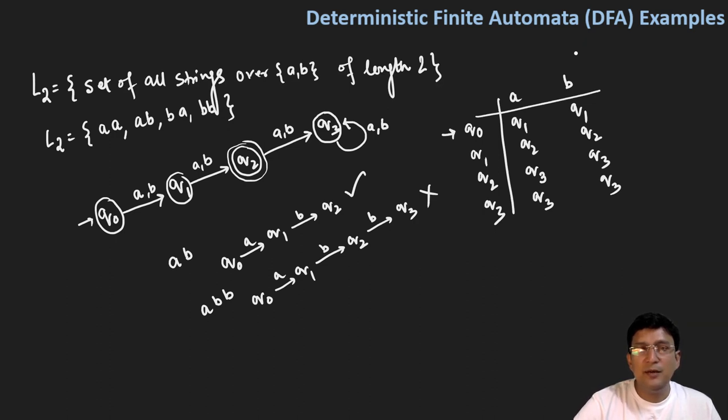In the transition table we have q0 as the start state and q2 is the final state. So let's encircle this q2 that represents that this is the final state. So we'll see more examples in the subsequent lectures. Thank you for watching.